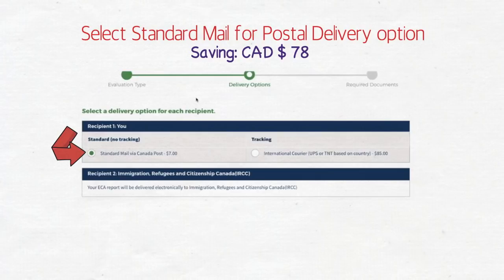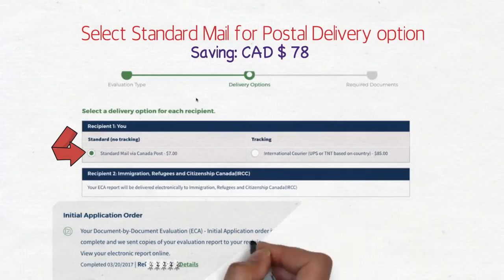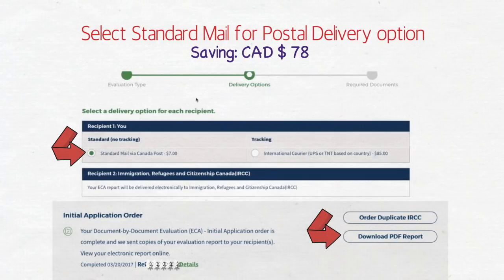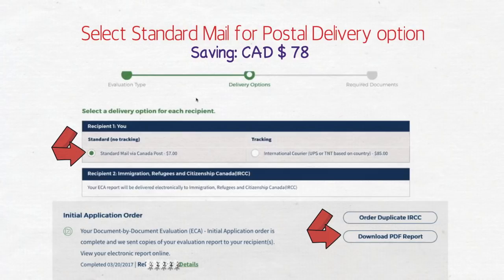The reason you don't need the expensive option is that you don't actually need the hard copy they send to your home. For immigration and PR purposes, you just need to upload the PDF version of your report, which you can download directly by clicking the 'Download PDF Report' button once your application is reviewed and completed. So just select the first option and forget about the hard copy.